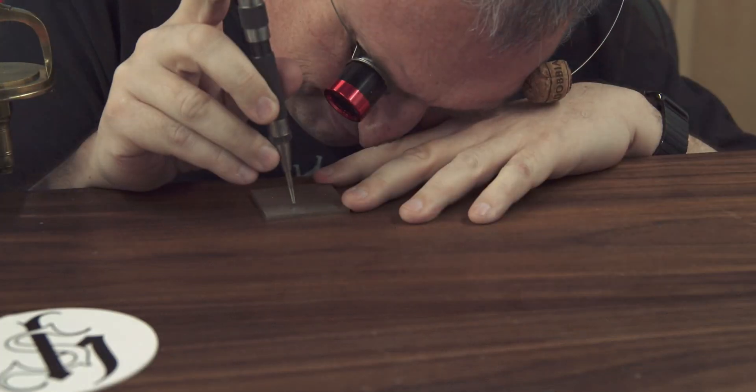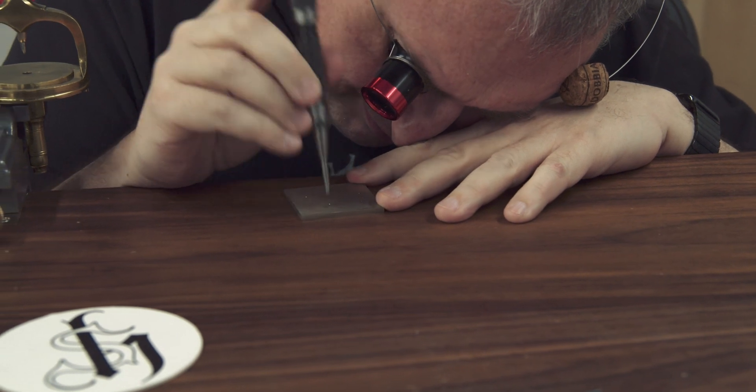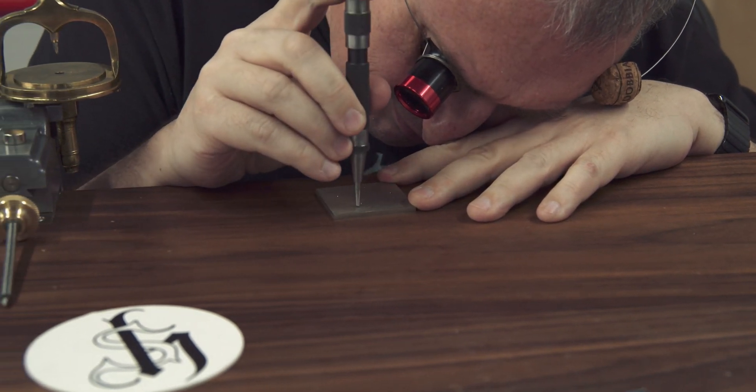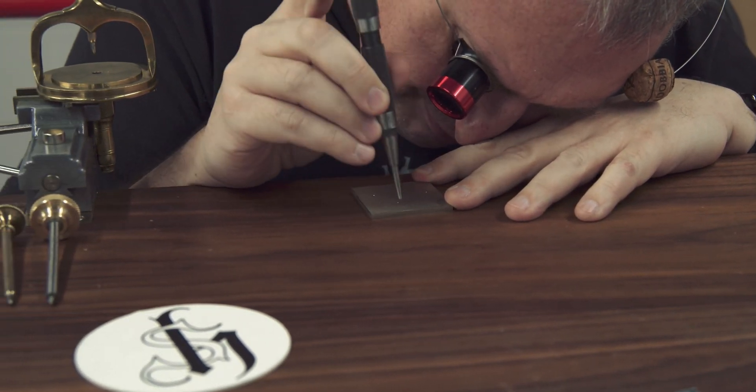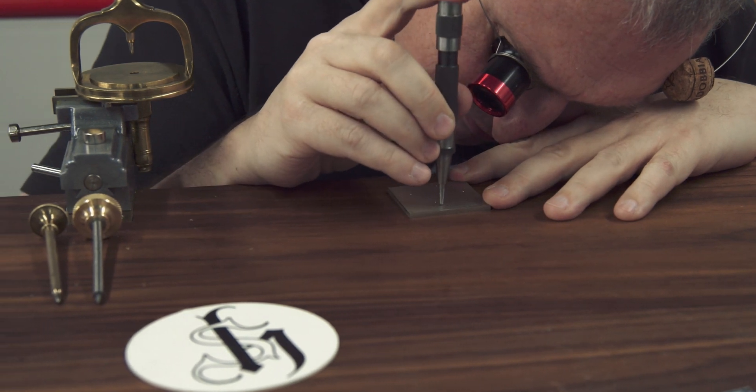Once all the hole locations have been transferred onto the bridge plate, we can separate the two plates by soaking them in acetone. That'll dissolve the CA glue that's there.